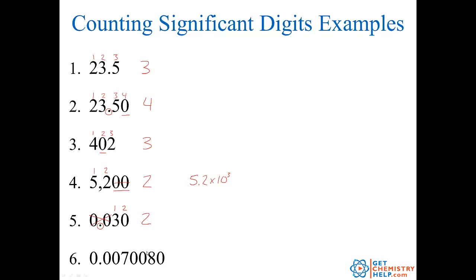Let's do one more and wrap it up. How about 0.0070080? Zeros on the front are never significant. The zeros sandwiched between the 7 and the 8 are significant. And the zero on the end? The rule says it is significant if there's a decimal anywhere in the number — and there it is. So that would be five significant figures. I hope you found this brief lesson helpful. For more practice problems with significant digits please come visit me at getchemistryhelp.com. Thank you.